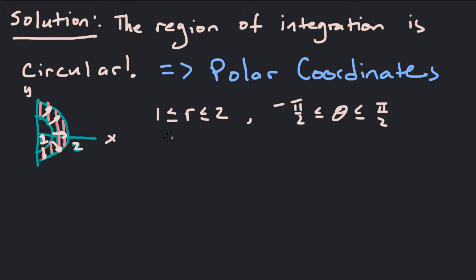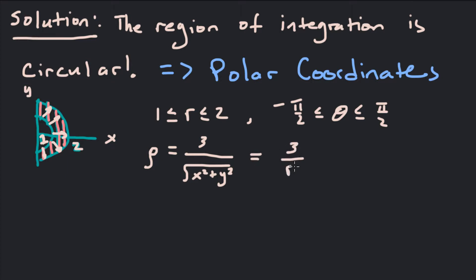We've got our bounds. Now all we need to do is change our integrands to polar coordinates. Rho equals 3 over the square root of x² + y², which is actually inversely proportional to the distance from the origin — that's just 3/r. So as we get closer to the origin, we have more and more mass, and further away, we have less mass. That's our density function rewritten in polar coordinates. Now let's calculate Ix.